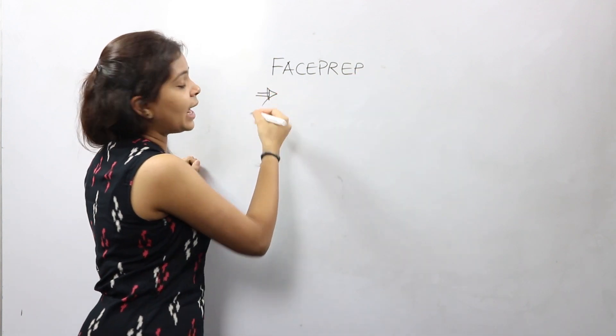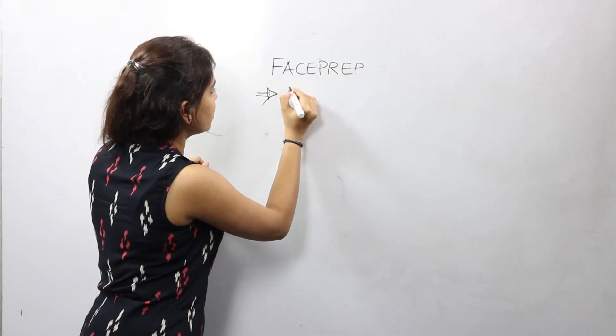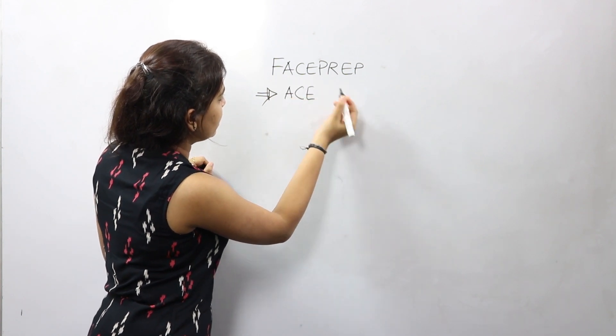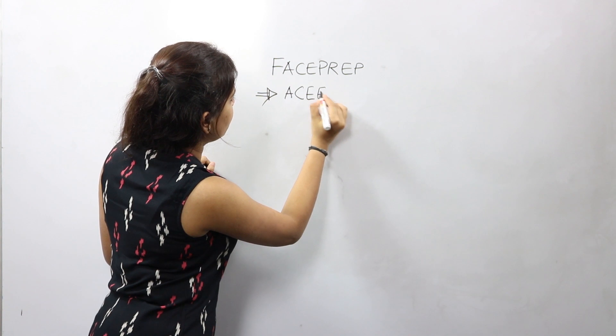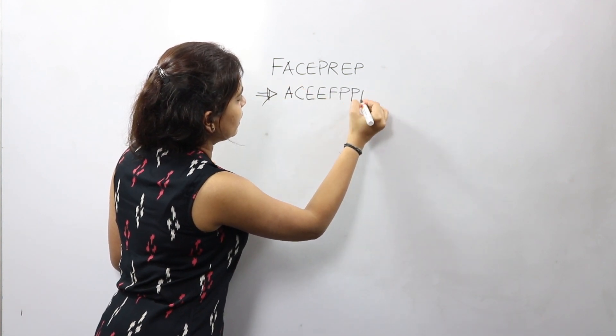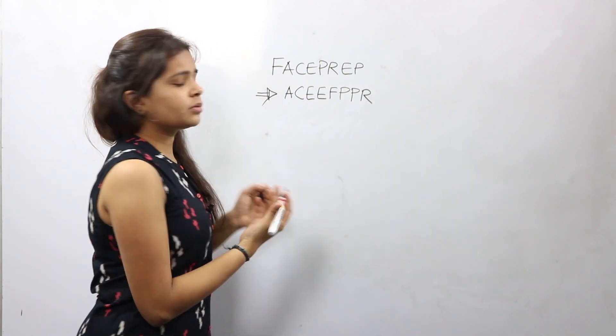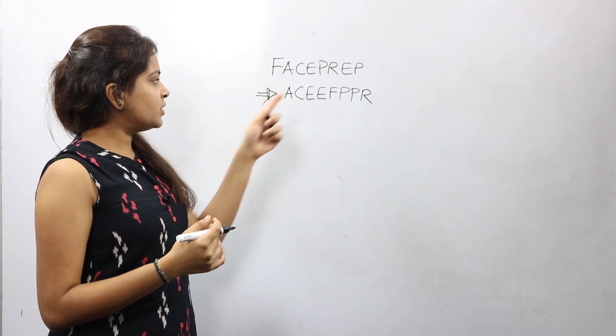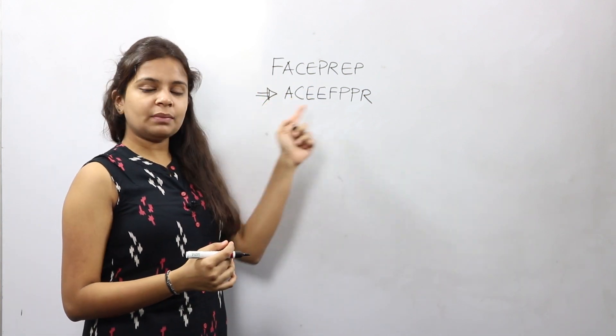So sorting this in alphabetical order would give us A C E E F P P R. That's exactly what we mean by alphabetical order. The characters of the string are supposed to start from A to Z.